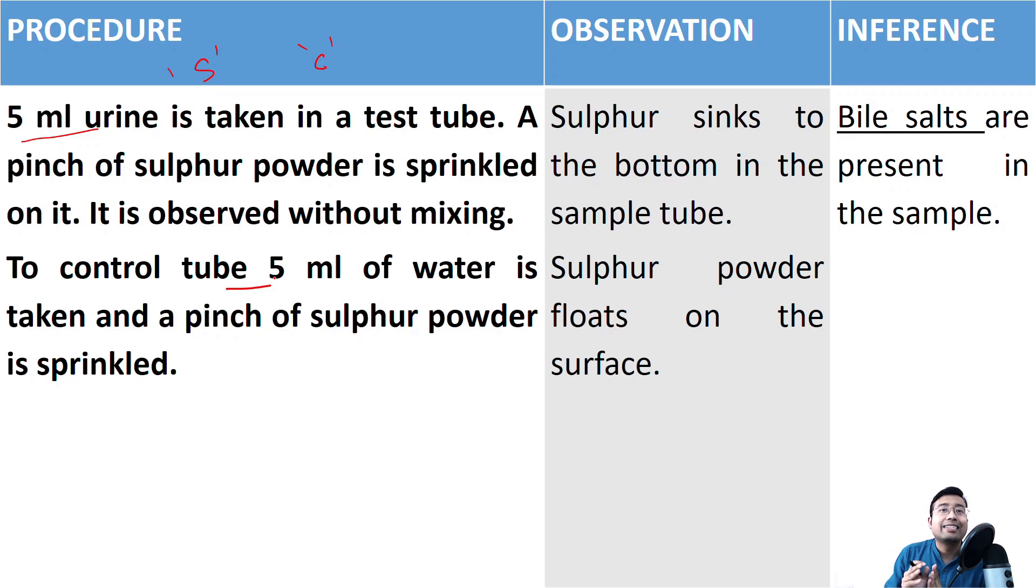After that, you don't shake the tube. You make sure those two tubes stand absolutely still. And if bile salts are present in your sample, the observation will be sulphur powder will sink to the bottom in sample tube. However, it will continue to float on the surface in case of the control tube. The inference is bile salts are present in the sample.